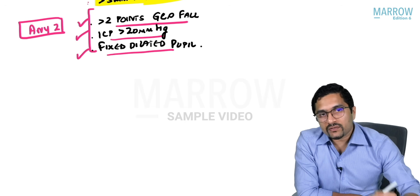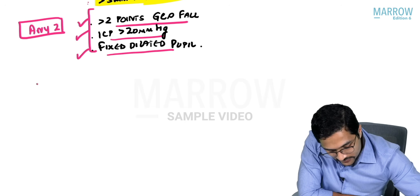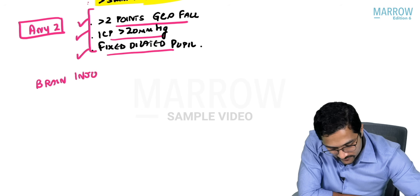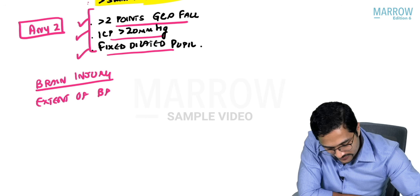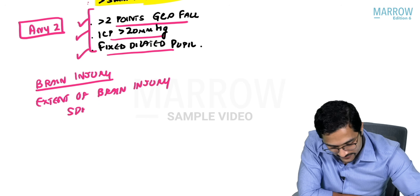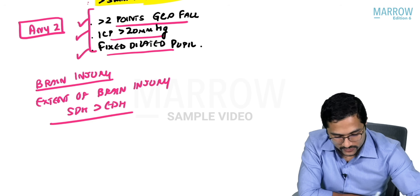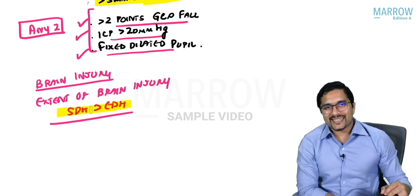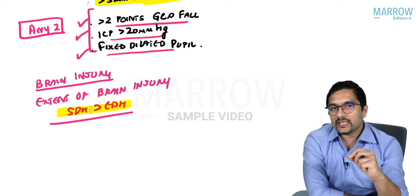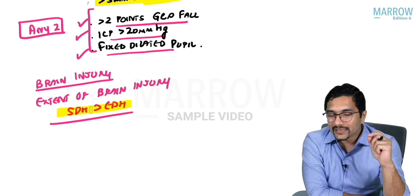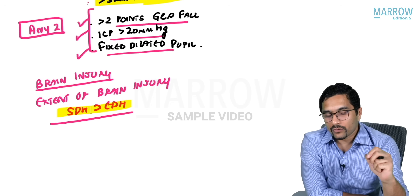One final important point regarding SDH: the extent of brain injury is more in SDH compared to EDH. This is written in both Bailey and the ATLS manual — brain injury is greater in subdural hemorrhage than in extradural hemorrhage.